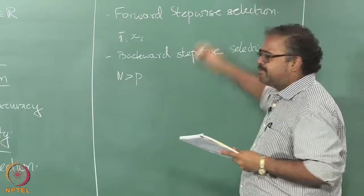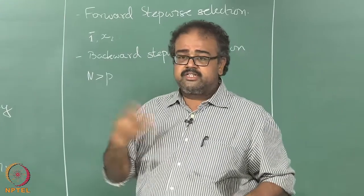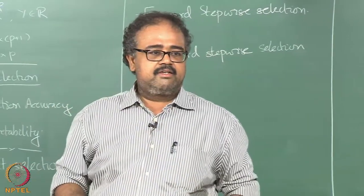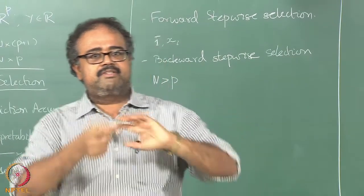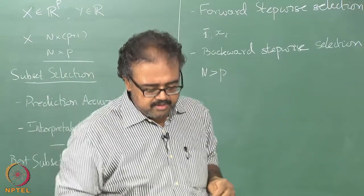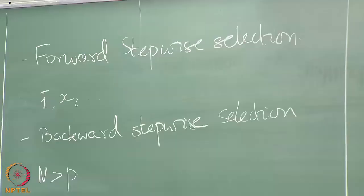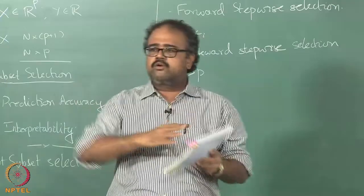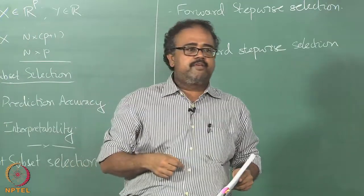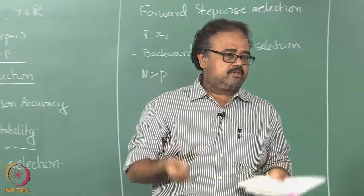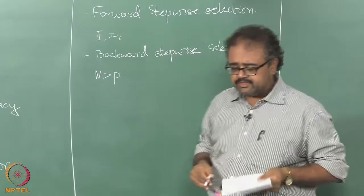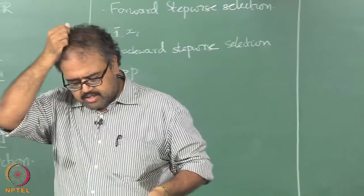People actually come up with all kinds of variants on this. One thing which you could do is think of some kind of hybrid approach where I keep adding and deleting directions. If you remember, we talked about how greedy is not always the best way to grow things. You can grow up to a certain level, and maybe then dropping one of the earlier dimensions will actually give you a slightly better performance. That is one possibility. You could do some kind of a hybrid version of this.